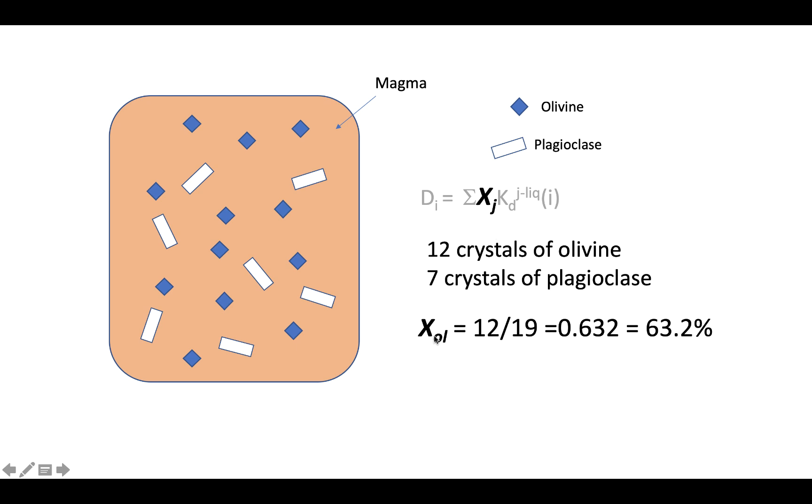This Xj now becomes X_ol, ol for olivine. That would be the total number of crystals of olivine, which would be 12, over the total of all of the crystals. There are 19 crystals altogether. So the fraction of olivine for the purposes of this distribution coefficient would be 12 over 19, or 0.632, or we can write it as a percent as 63.2%, but we'll use it as a fraction later on.